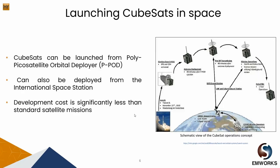So let's see how the CubeSats are launched in space. CubeSats can be launched as secondary payload from standardized injection modules such as the Poly-Pico-Satellite Orbital Deployer or P-POD, or can be deployed from the International Space Station. Development cost for the CubeSat is significantly less than standard satellite missions and this is due to the fact that CubeSats can be launched as secondary payload from the standardized injection modules. On the right we can see a schematic view showing the CubeSat's operation stages from the time it launches up to the end of its life which is usually up to one year.